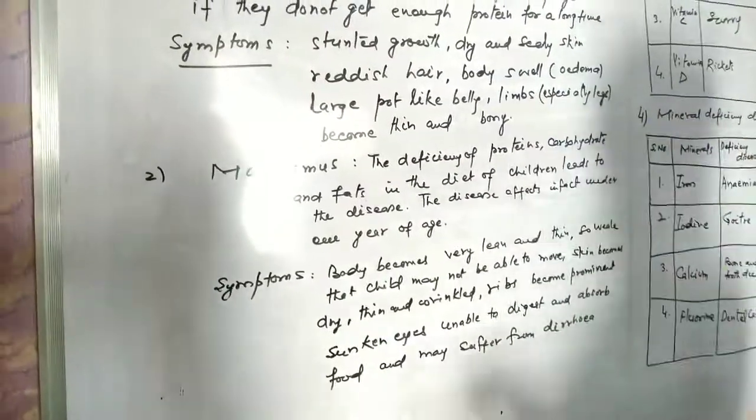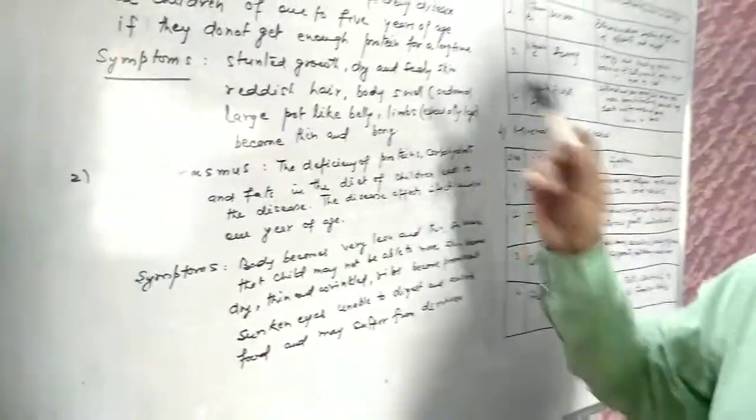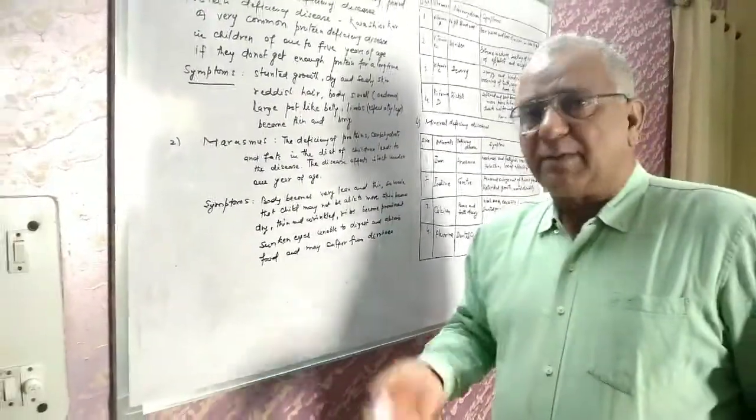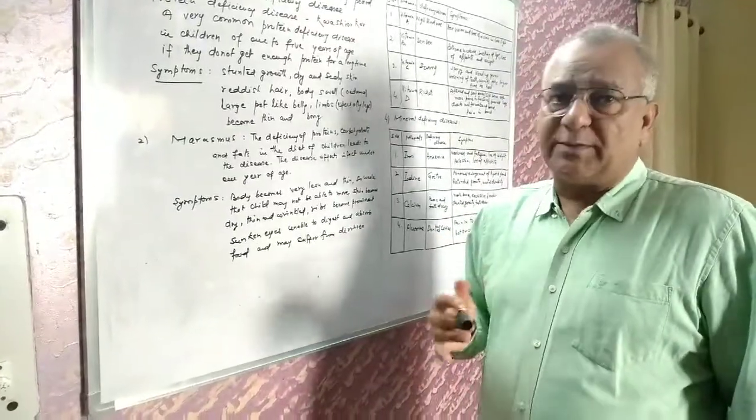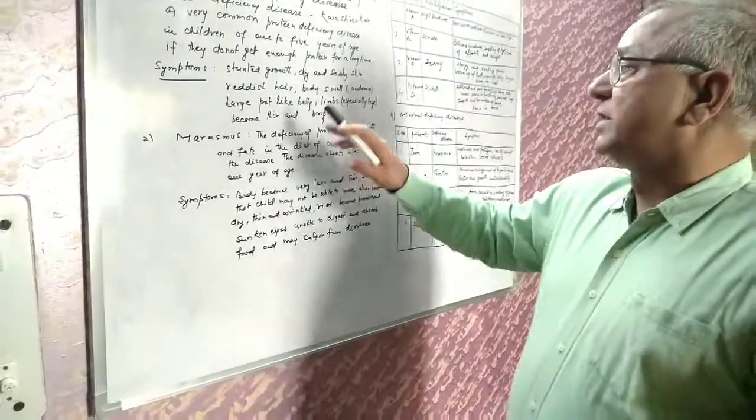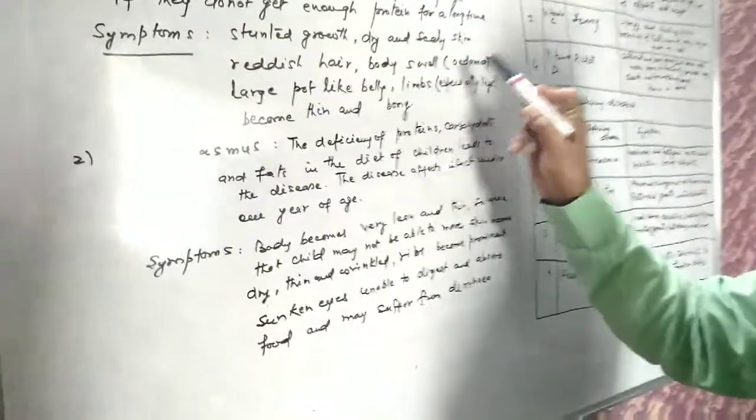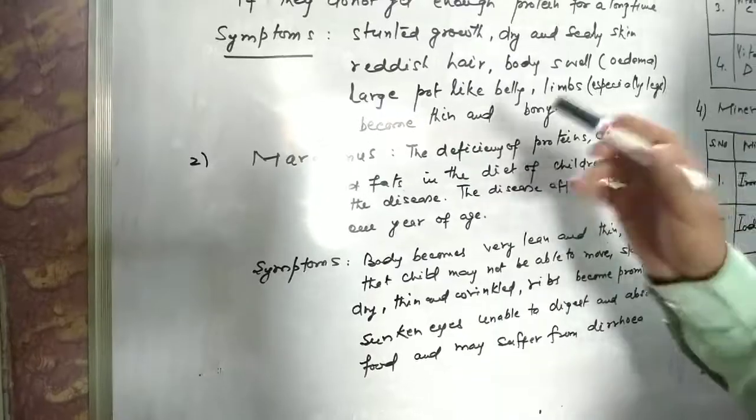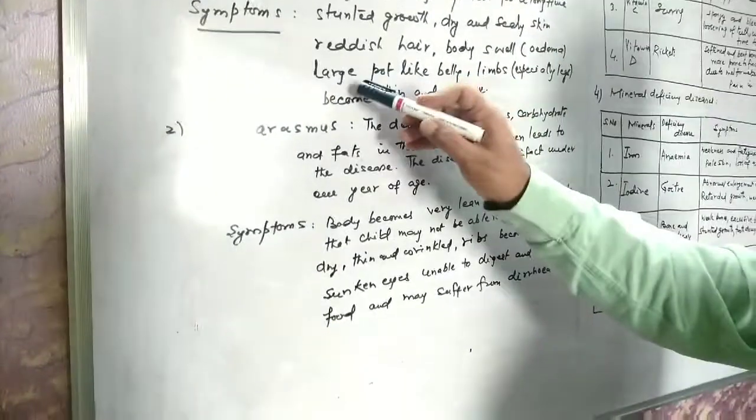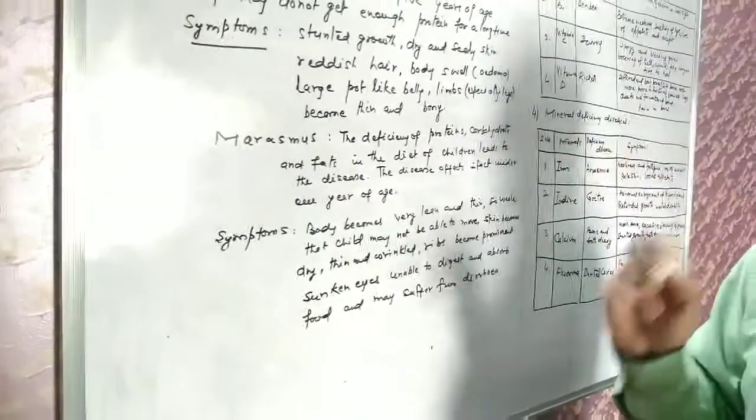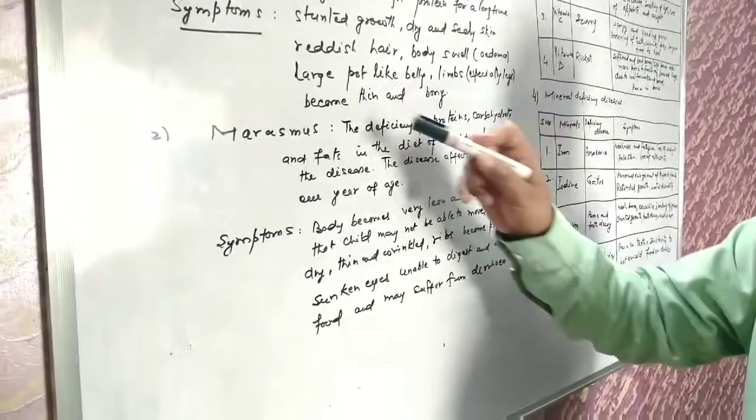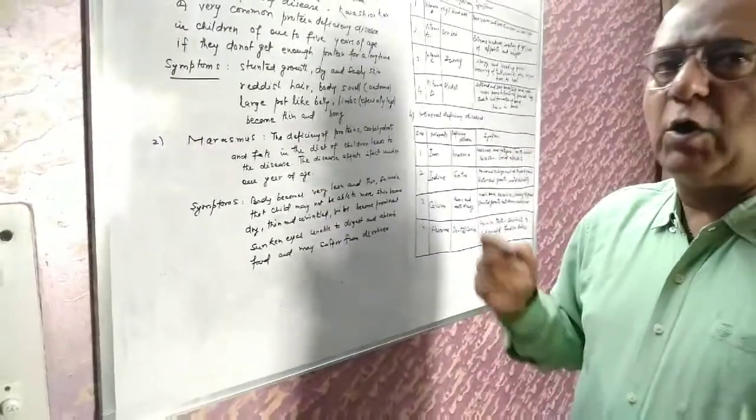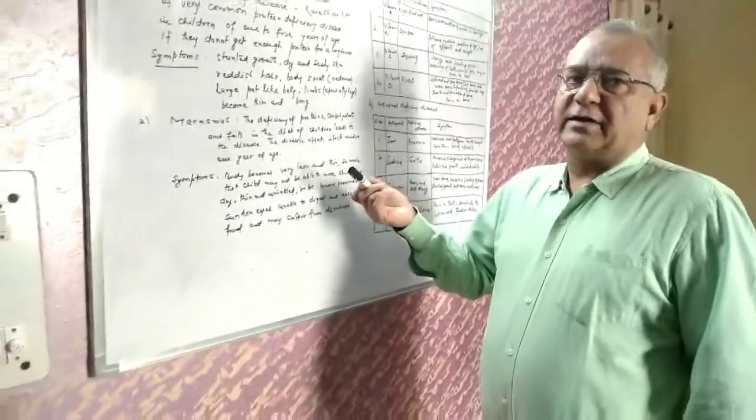Body swelling occurs, called edema. Water that should be excreted from the body gets retained, causing body swelling. The belly is pot-like, a large pot-like belly. The limbs are thin and bony - muscles are reduced.